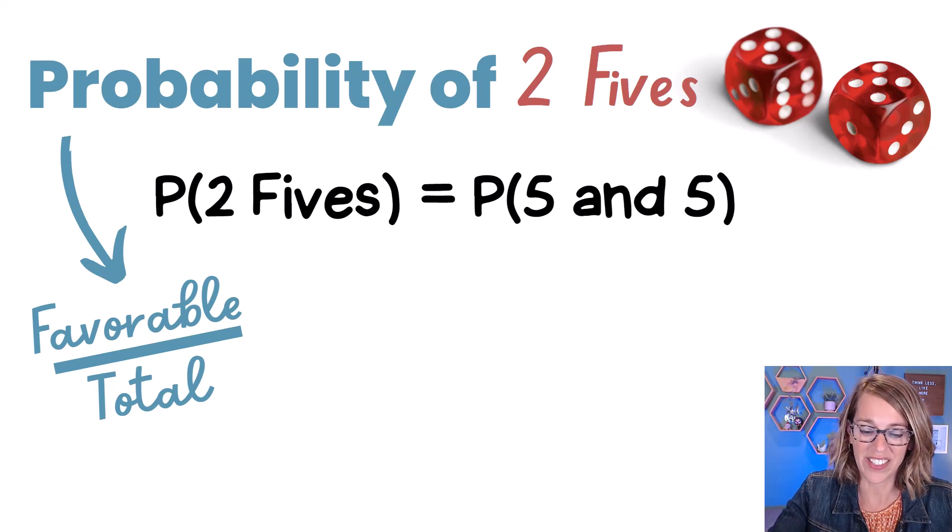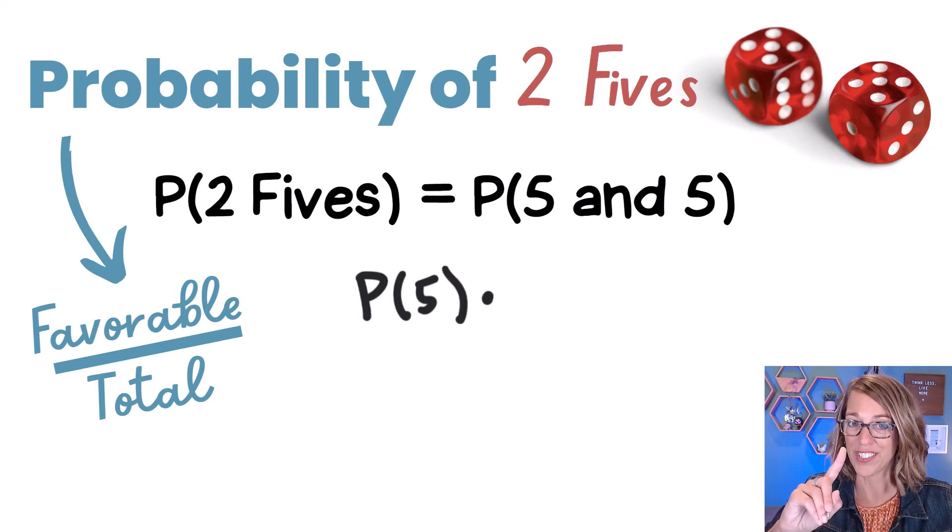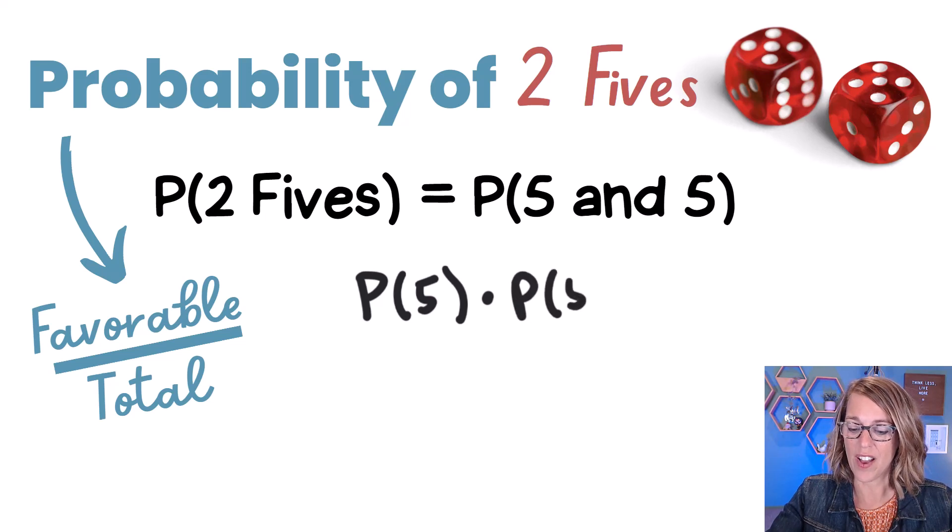Let's go ahead and break this down. So that probability of five and five can really be written as the probability of five on the first and, which is multiply, the probability of five on the second.